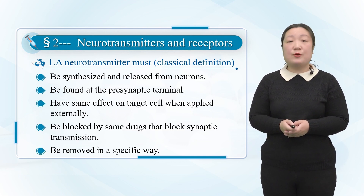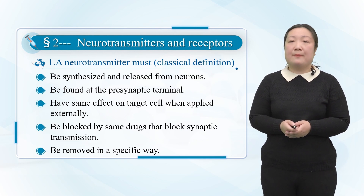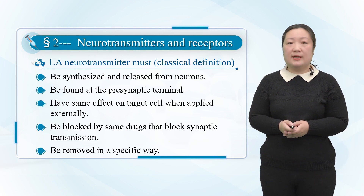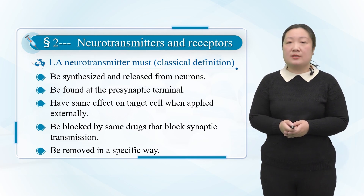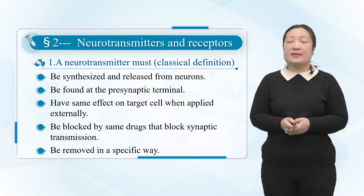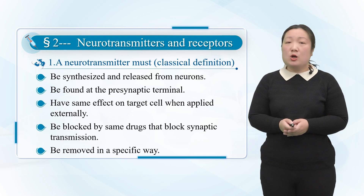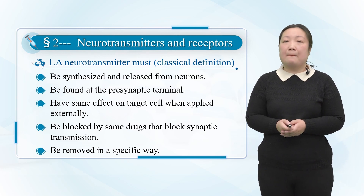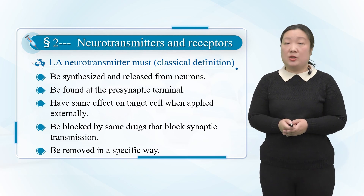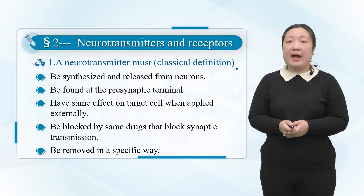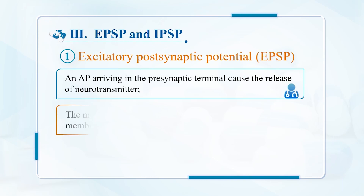A neurotransmitter refers to a substance synapsed by pre-synaptic neurons and released at the terminals, diffusing through the synaptic cleft, and specifically acting on the post-synaptic neurons or effector cells, causing information to be transmitted from pre-synaptic to post-synaptic components. A receptor refers to special biological molecules that can specifically bind to certain chemical substances and induce biological effects in the cell membrane or cell. The transmitter and receptor binding characteristics include: sensitivity, specificity, and competitive inhibition.